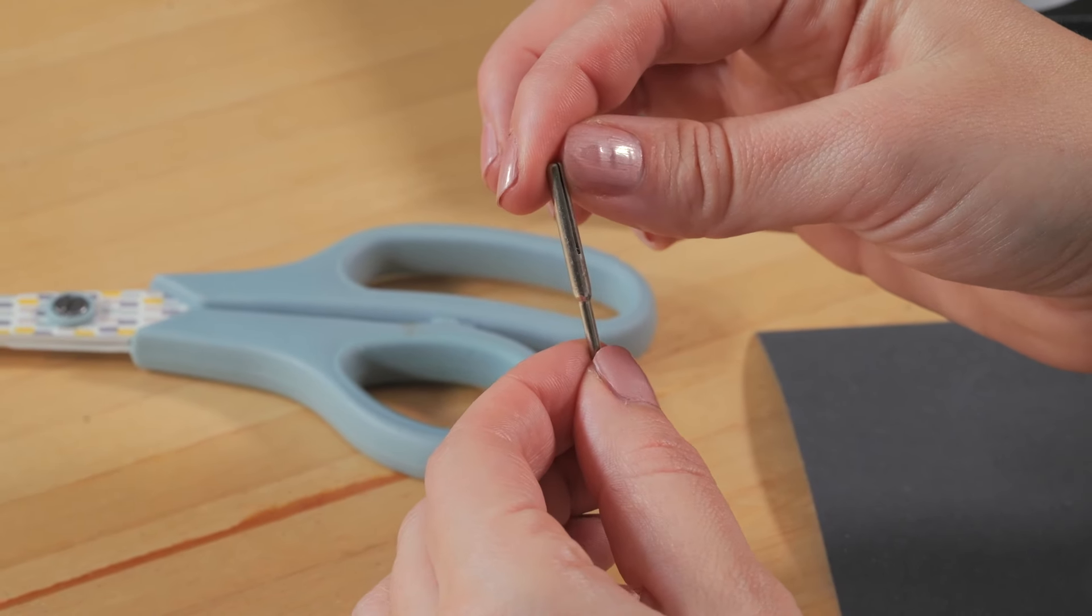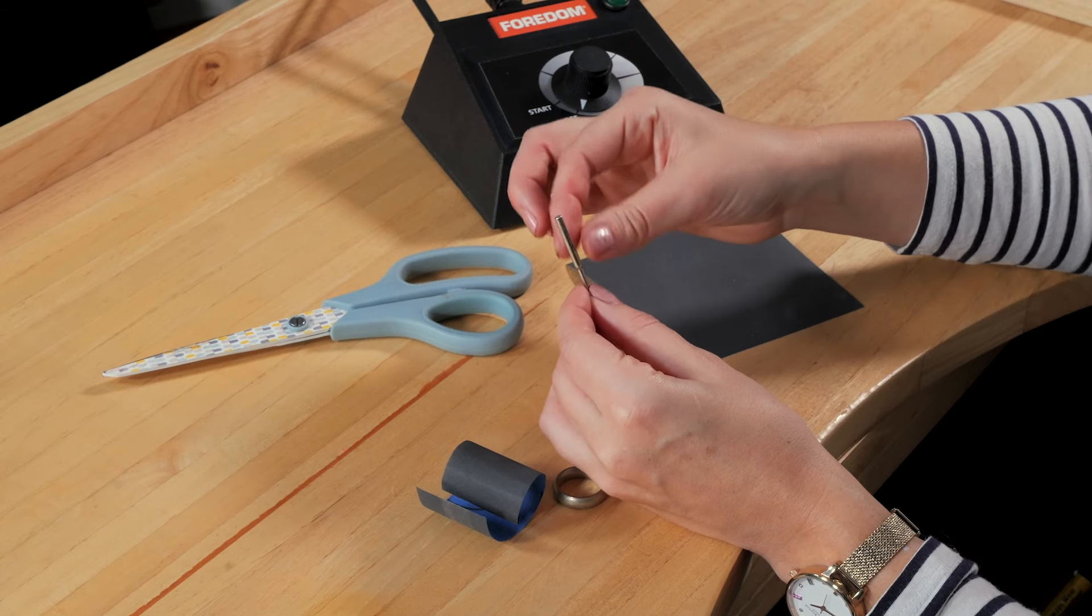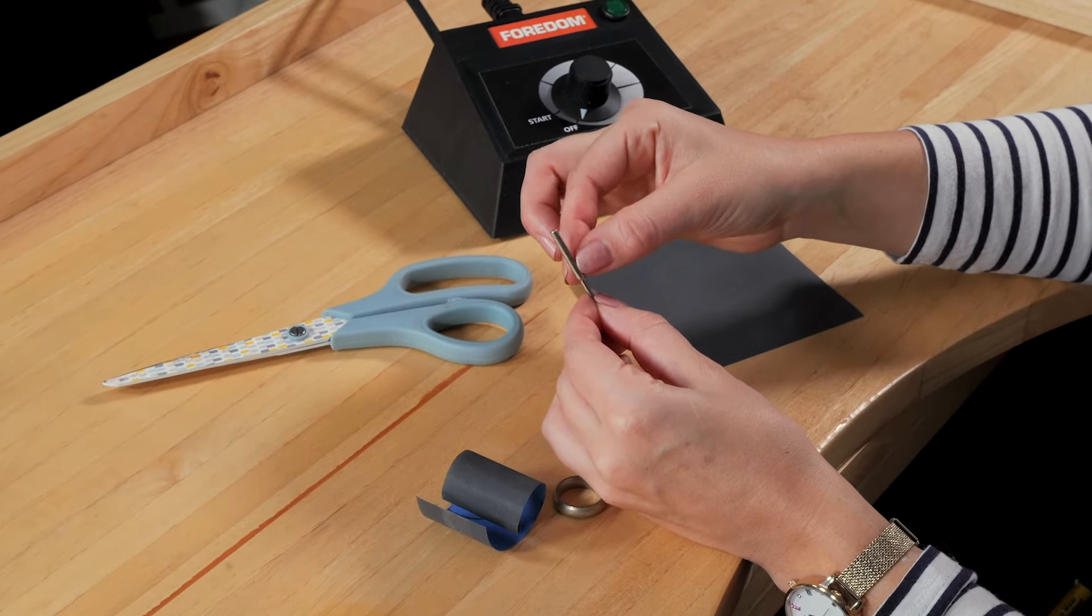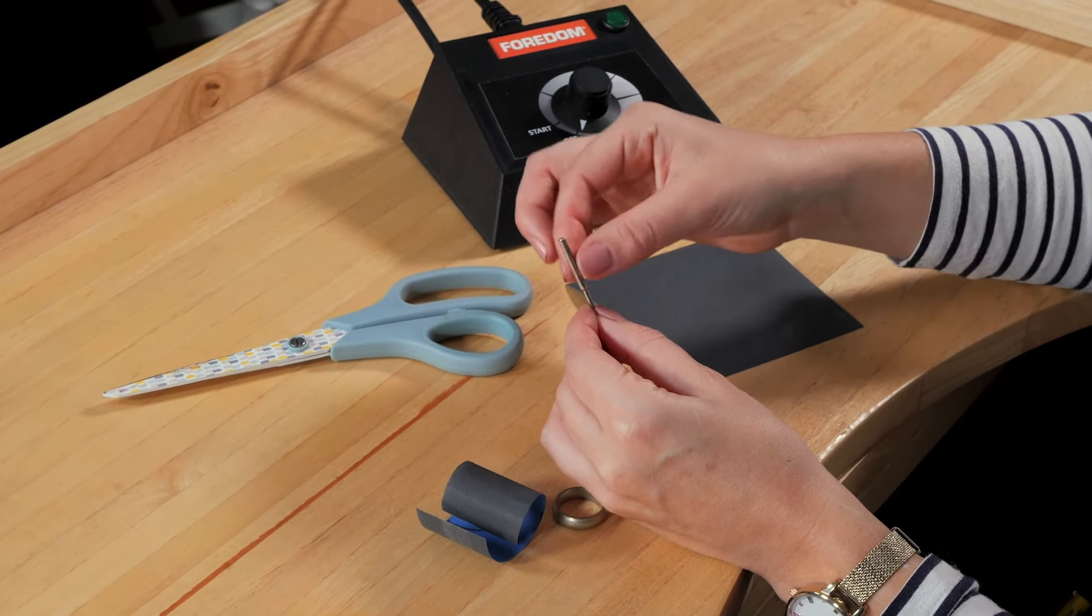And you can get these from any kind of jewellery tool supplier, and the great thing about the split is you can obviously attach your emery paper in there.